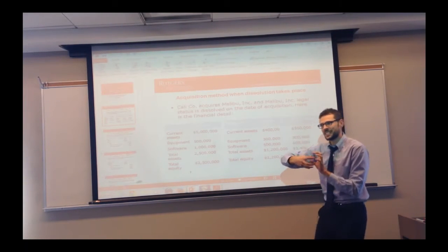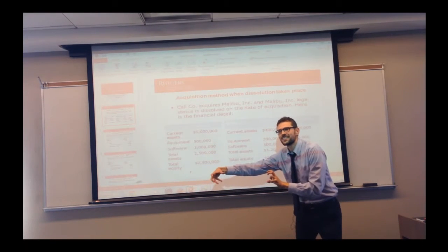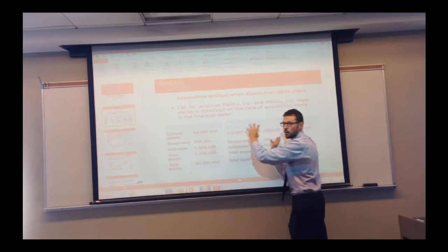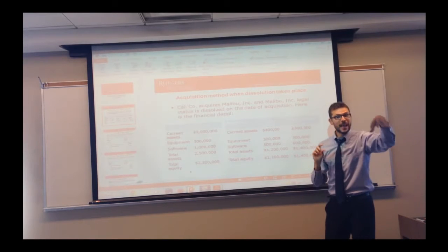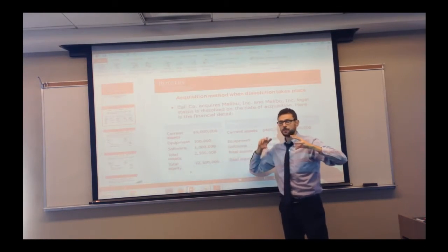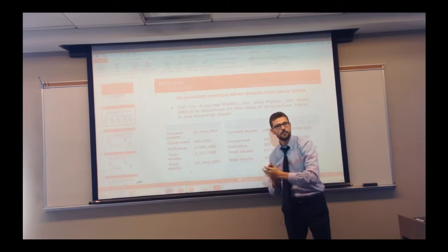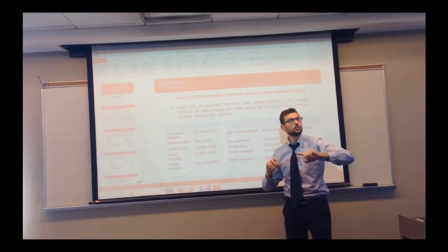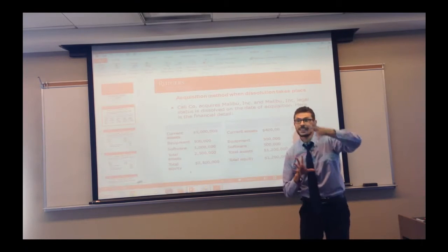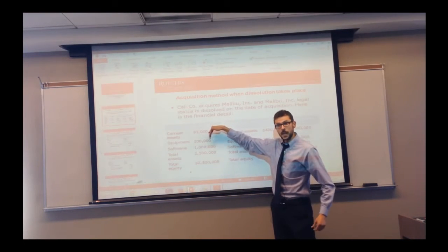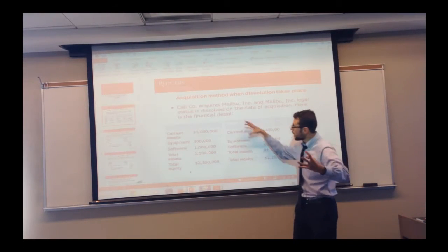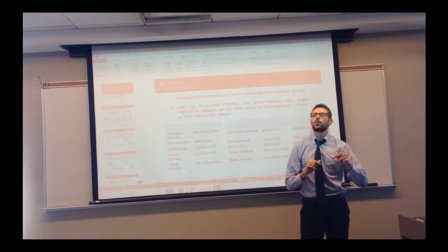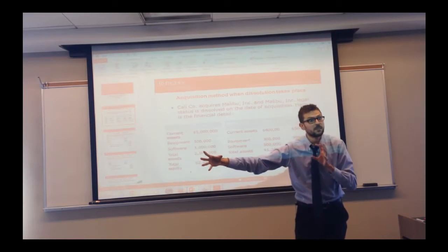At year end, our objective is to keep accurate track of this investment account. But at year end, we need to eliminate it. We need to eliminate because at year end we're going to get all the assets of the sub transferred to our balance sheet, no longer being an investment but now being actual hard assets in the form of current assets, equipment, software. So we forget that the elimination happened and we continue to keep track of the investment account as is.